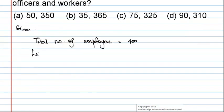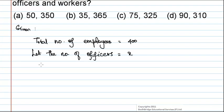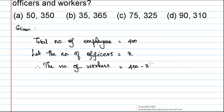Let the number of officers be equal to X. Therefore, the number of workers will be equal to 400 minus X.